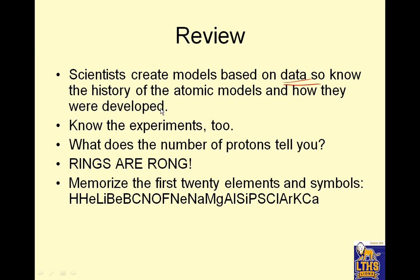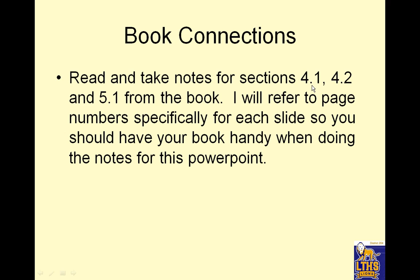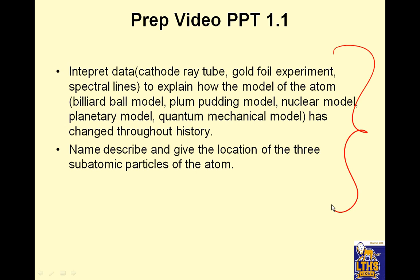Let's review. Scientists create models based on data — you need to know the history of the atomic models and how they were developed. Know the experiments that led to the new models of the atom. Make sure you know what the number of protons tells you about an atom. Rings are wrong because it's probability clouds. And don't forget — memorize the first 20 elements and their symbols. Make sure you've read and taken notes on those pages in the book, and see if you can do those two things — not just at a basic level, but some in depth.